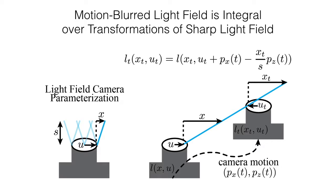By analyzing the motion-blurred light field in the primal and Fourier domains, we show that capturing a light field enables novel methods of motion de-blurring that are not possible with just a conventional image.